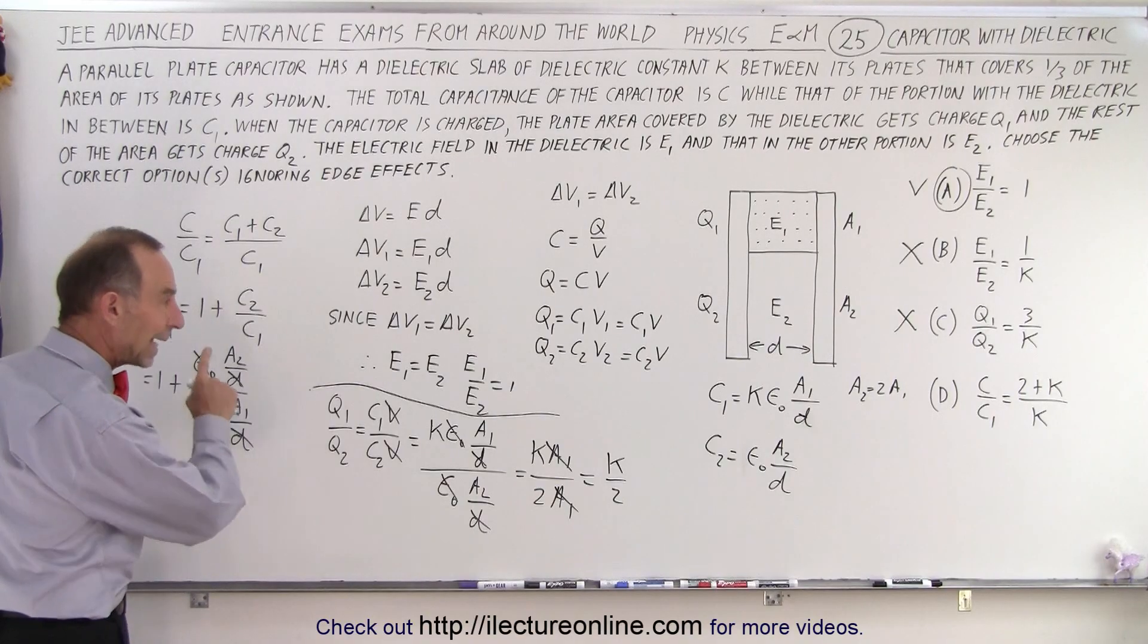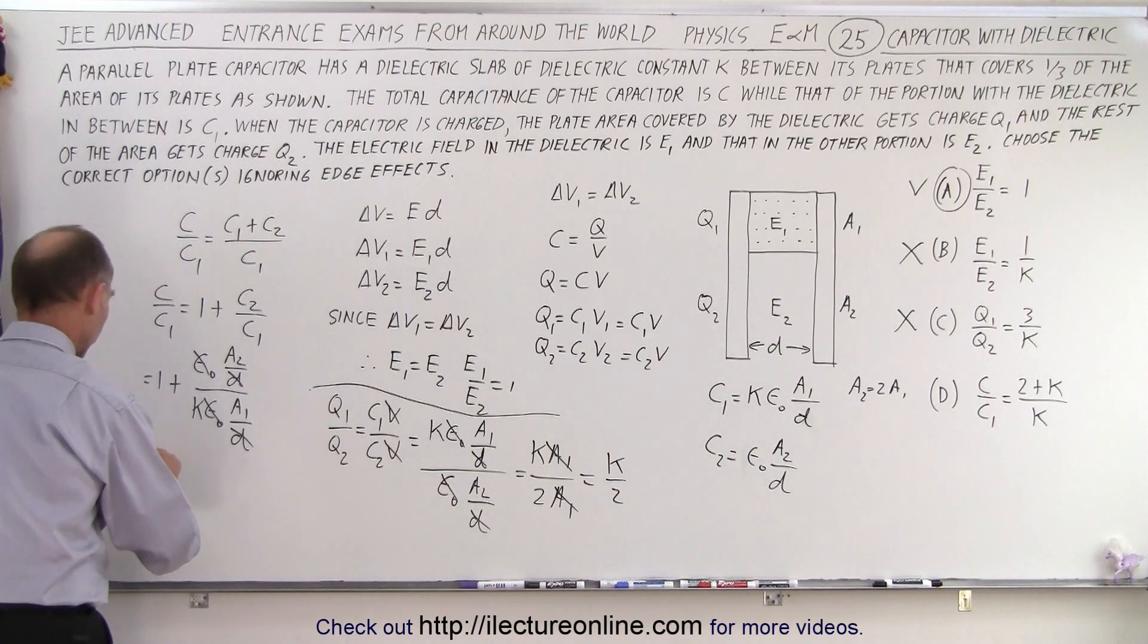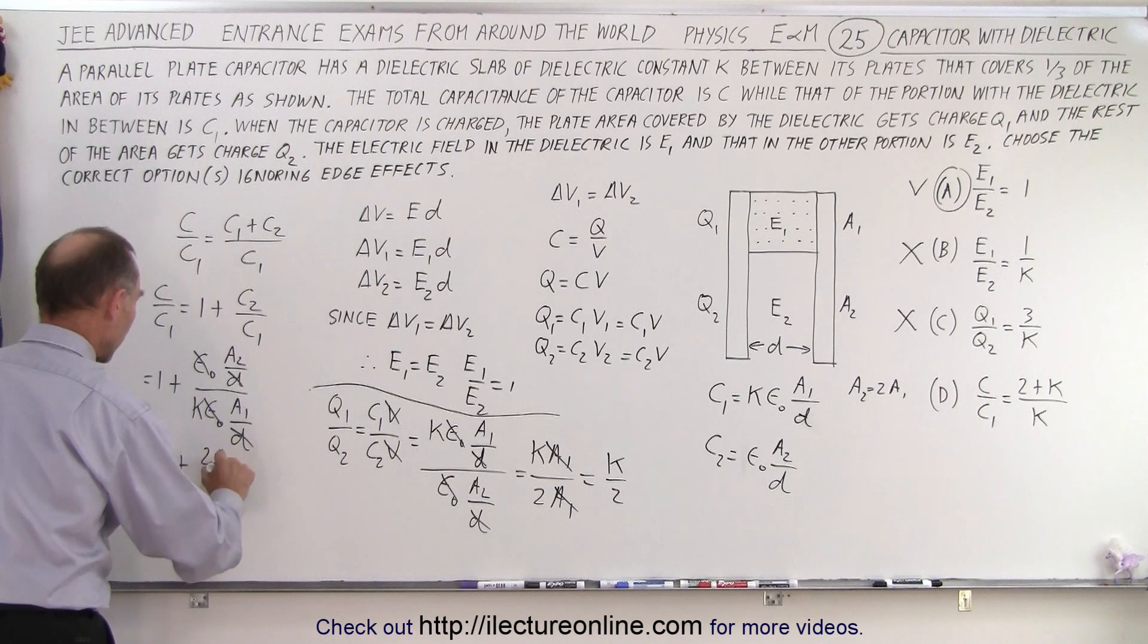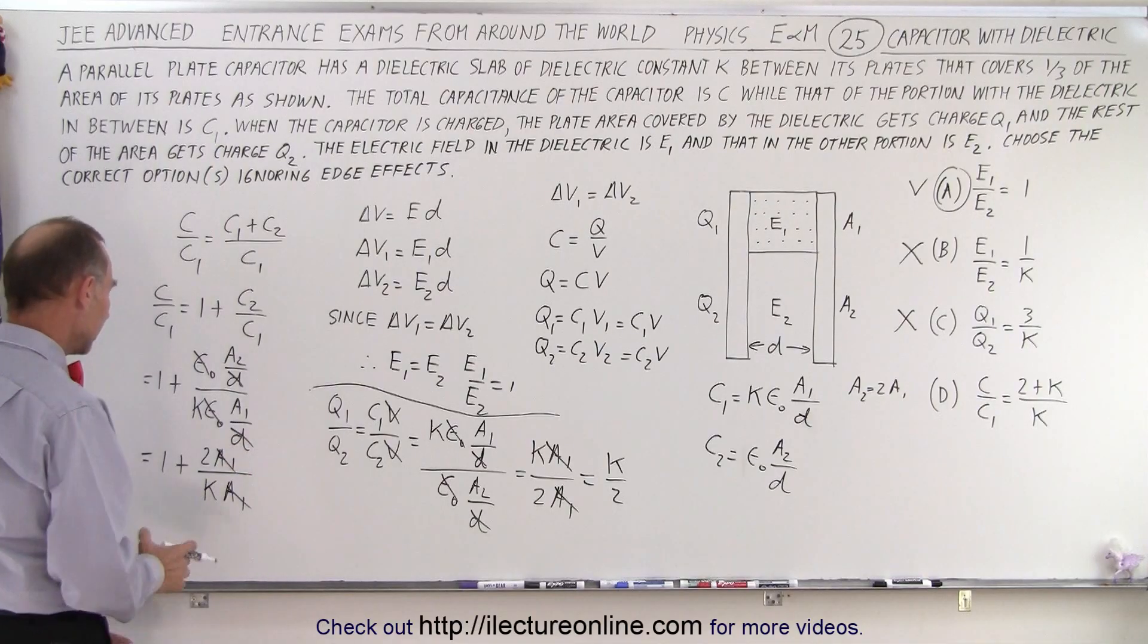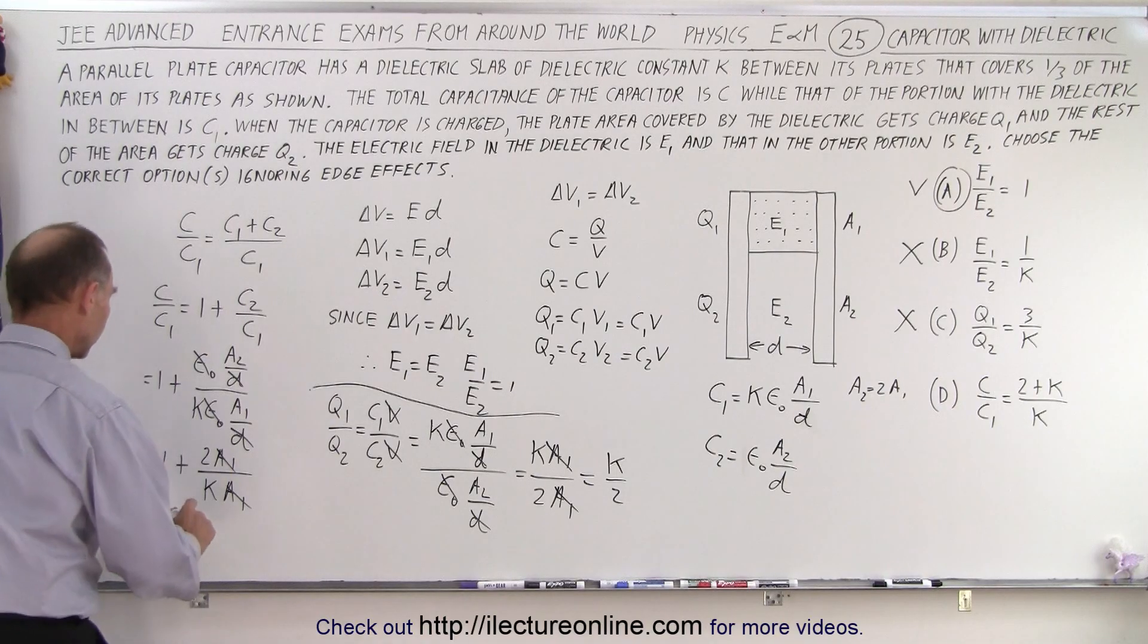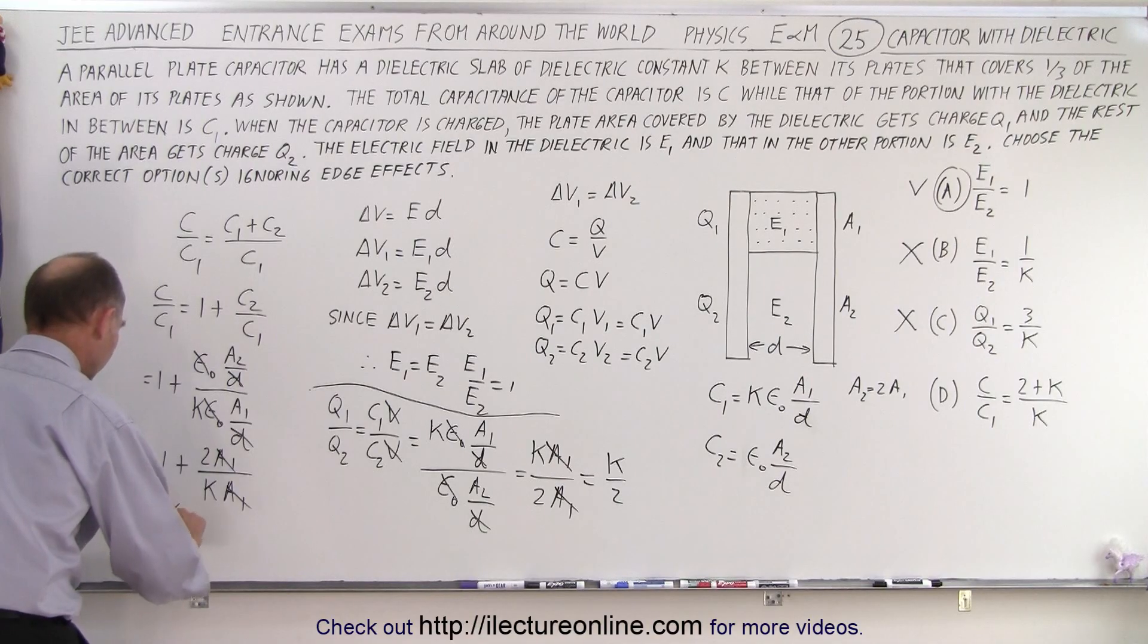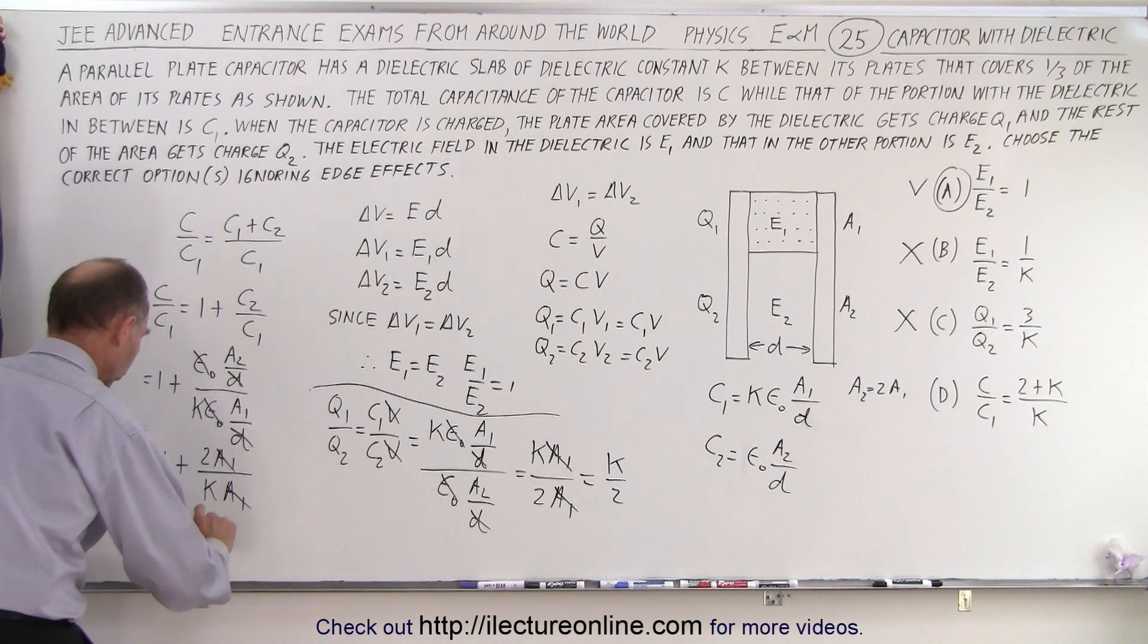So now we also know that A2 is twice A1, so this is equal to 1 plus 2A1 divided by K times A1, of course the A1s cancel, and now we have 1 plus 2 over K. So this can be written as K over K plus 2 over K.